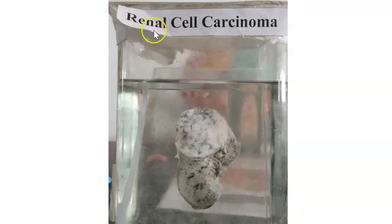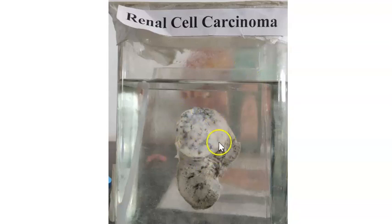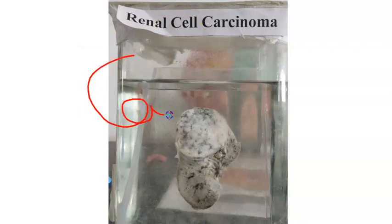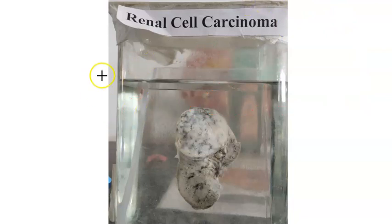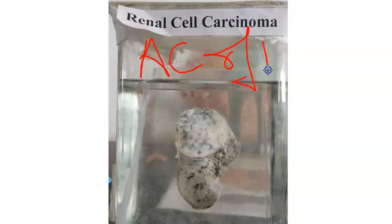In this video we want to look at renal cell carcinoma. What you're looking at here is the kidney - you can see at the upper pole of the kidney there is some mass. This is carcinoma of the kidney, a malignant condition. This is also called adenocarcinoma of the kidney.